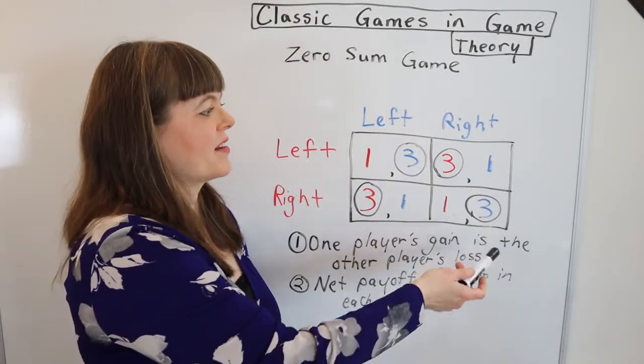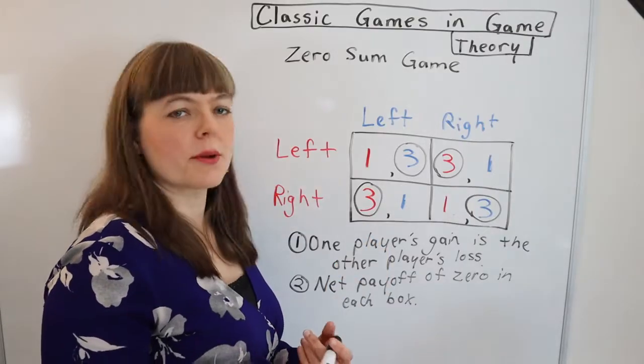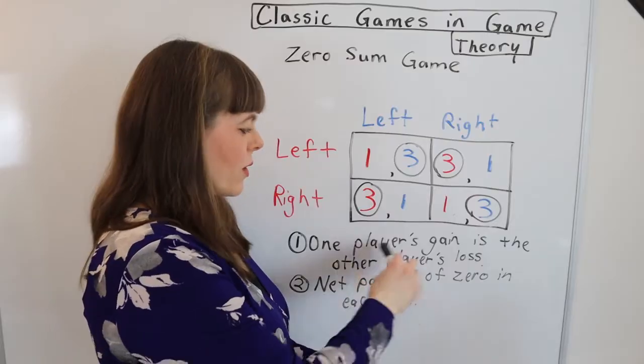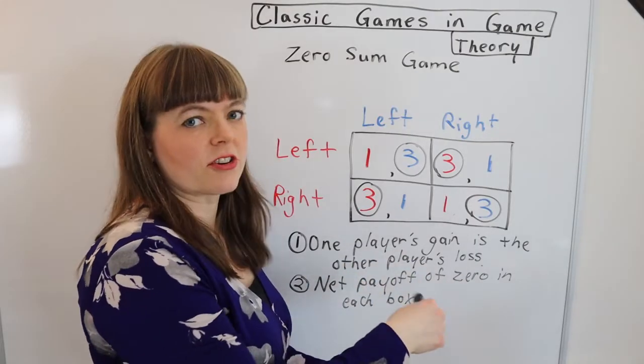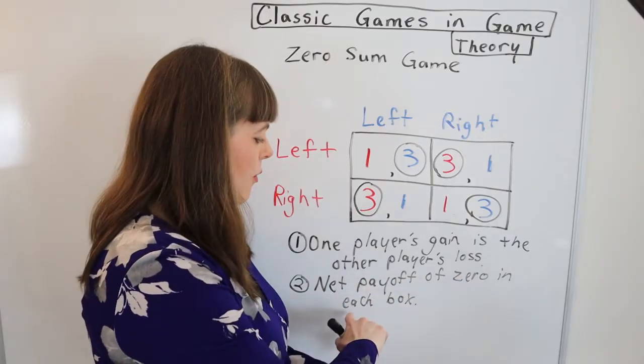I added two and the outcome did not change. We still have no pure strategies Nash equilibrium. And yet I think it is still kind of true that one player's gain here is another player's loss, and yet we don't have a net payoff of zero in each box.